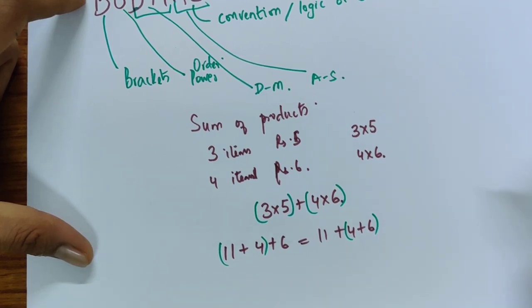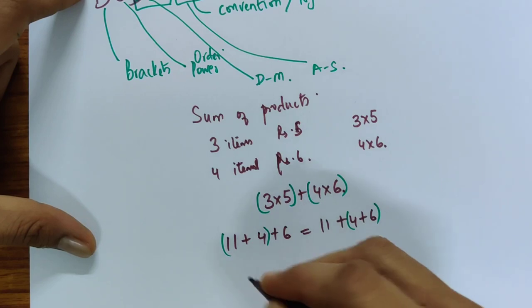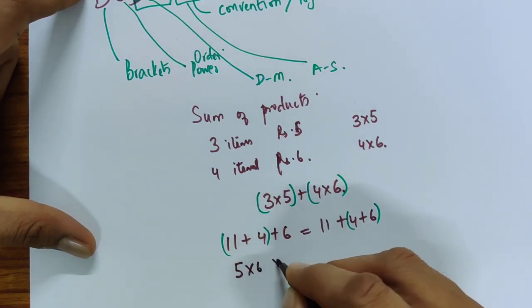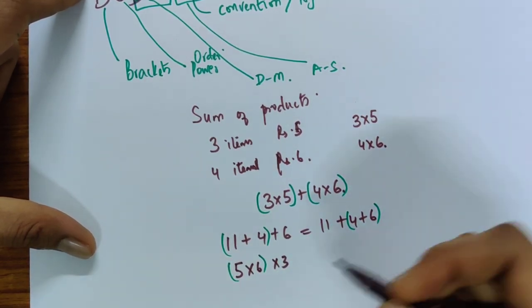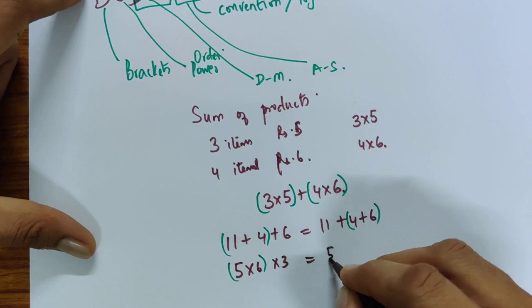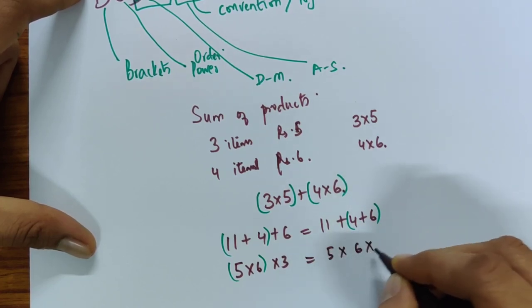Now this is not the case for something like subtraction. Again in multiplication if you had 5 times 6 times 3 then potentially doing 5 times 6 times 3 is the same as 5 times 6 times 3.